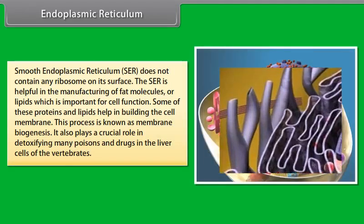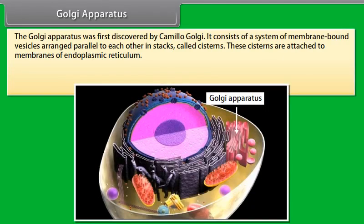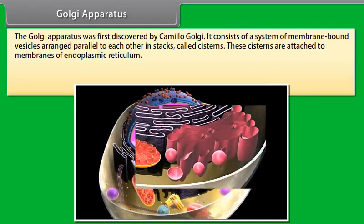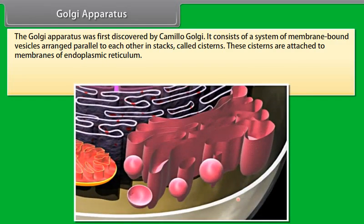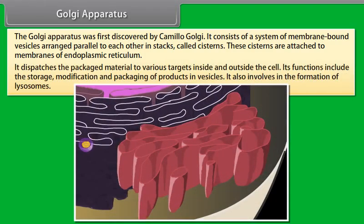Smooth endoplasmic reticulum (SER) does not contain any ribosomes on its surface. The SER is helpful in the manufacturing of fat molecules or lipids, which are important for cell function. Some of these proteins and lipids help in building the cell membrane, a process known as membrane biogenesis. It also plays a crucial role in detoxifying many poisons and drugs in the liver cells of vertebrates.